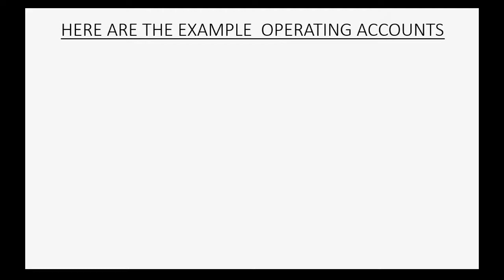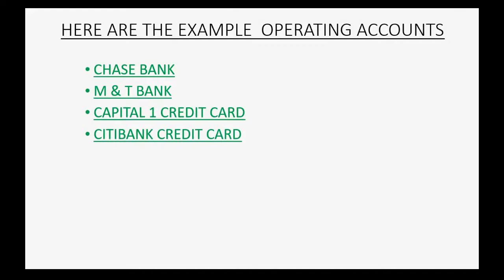Here are the example operating accounts we will use in the QuickBooks Online home finance course: a bank account at Chase Bank, a bank account at M&T Bank, a credit card with Capital One, a credit card with Citibank, and of course a separate record for cash on hand. We are going to add these accounts to the QuickBooks Online chart of accounts so we can record transactions in these records as they come up.